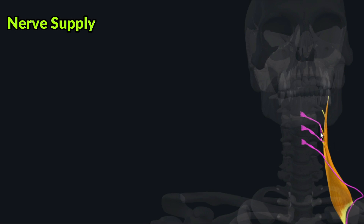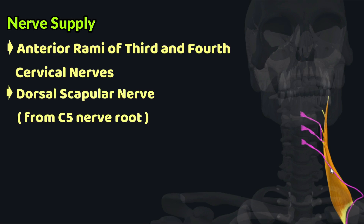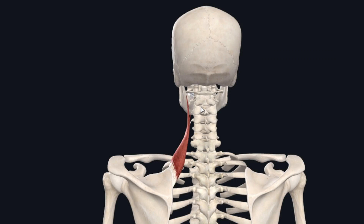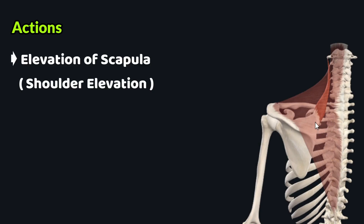The fibers of the levator scapulae travel inferolaterally to insert on the medial aspect of the superior angle of the scapula and the portion of the medial border of the scapula superior to the spine. The levator scapulae is supplied by the anterior rami of the third and fourth cervical nerves and the dorsal scapular nerve, which originates from the C5 cervical nerve root.